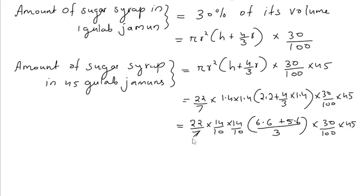Now cancel this 7 by 14. We get 2, and cancel these zeros. Multiplying these 3 we get 660/100. Adding 6.6 and 5.6 we get 12.2. 12.2 by 3 into 3/10 into 45.